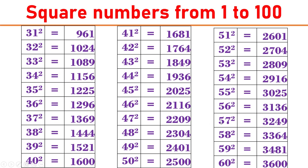57 square equals 3249. 58 square equals 3364. 59 square equals 3481. 60 square equals 3600.